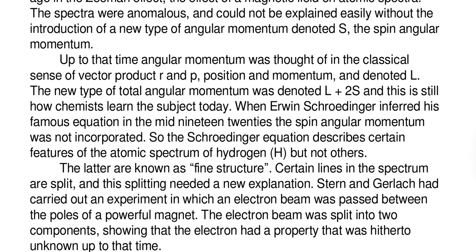The new type of total angular momentum was denoted L plus 2S, and this is still how chemists learn the subject today. When Erwin Schrödinger inferred his famous equation in the mid-1920s, the spin angular momentum was not incorporated, so the Schrödinger equation described certain features of the atomic spectrum of hydrogen, H, but not others.